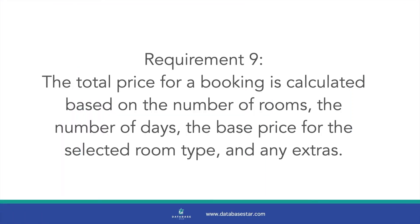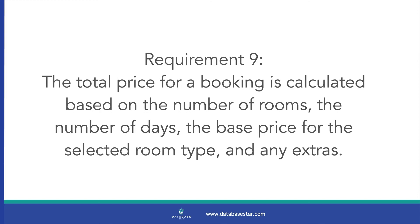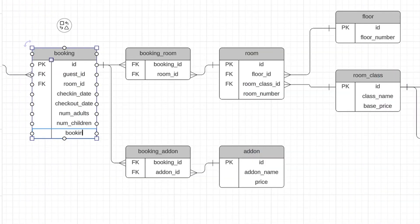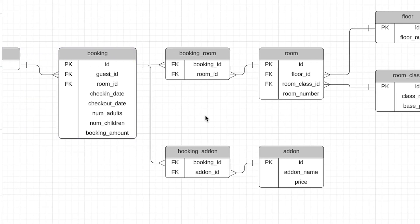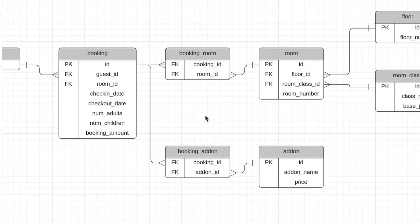Requirement 9 is about the total booking amount for the room and how it's calculated. We can add a column for this to the booking table called booking_amount. Even though it's a calculated field, it's set at a point in time and charged to the customer, so it's helpful to store it. Requirement 9 is now met.